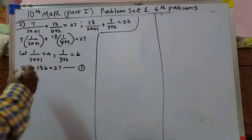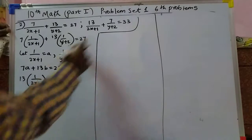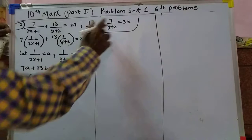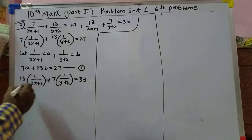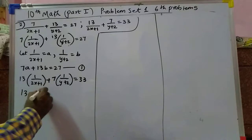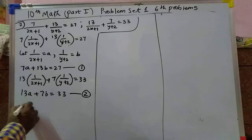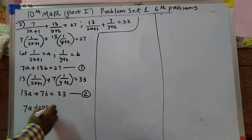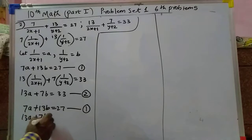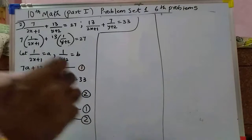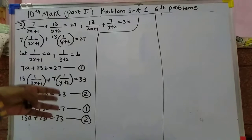Similarly, the second equation: 13 into 1 upon 2x plus 1 plus 7 into 1 upon y plus 2 equals 33. Substituting: 13a plus 7b equals 33, equation 2. So we have 7a plus 13b equals 27, equation 1, and 13a plus 7b equals 33, equation 2.